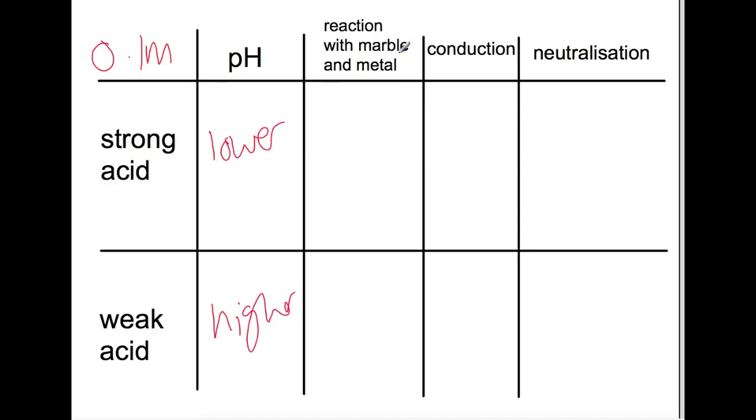Reaction with marble chips and with metal: for a strong acid it's going to react faster because it has more H+ ions in solution, whereas this one is going to react slower. For conduction, this will conduct more because it has more ions to carry a current than the weak acid. And for neutralization, they both require the same volume of alkali.